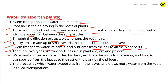There are two types of transport tissues in plants: xylem and phloem. Water and solutes are transported by the xylem from the roots to the leaves, and food is transported from the leaves to the rest of the plant by the phloem.